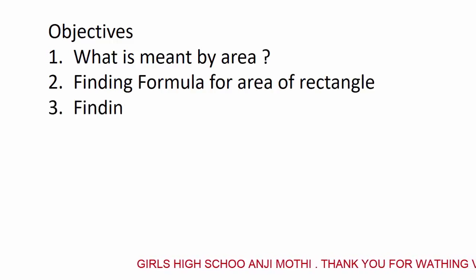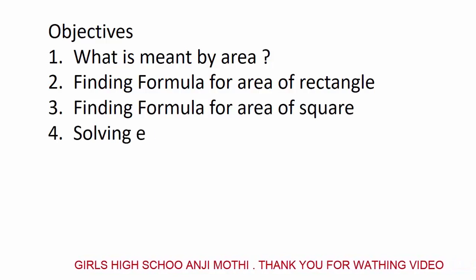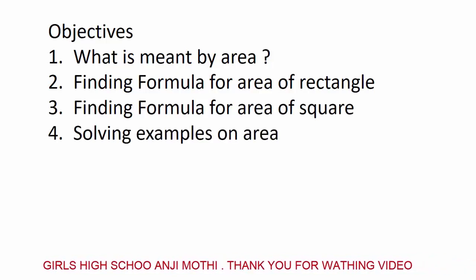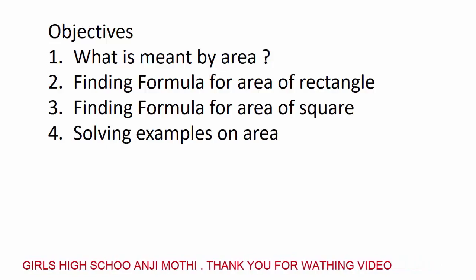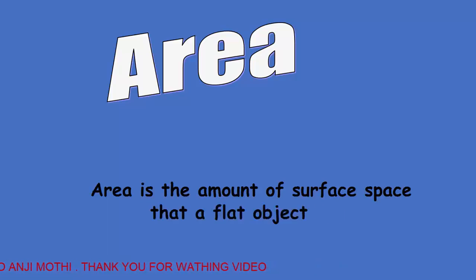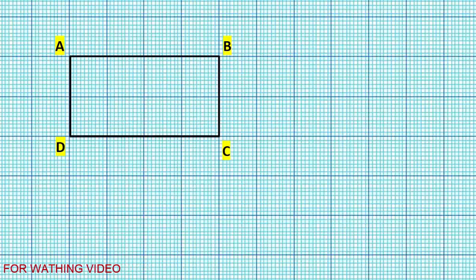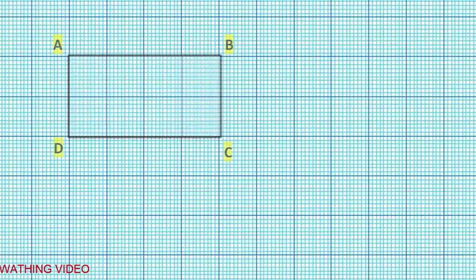What is meant by area? Definition: Area is the amount of surface space that a flat object has. Let us discuss it. See the figure — the figure ABCD is the rectangle.